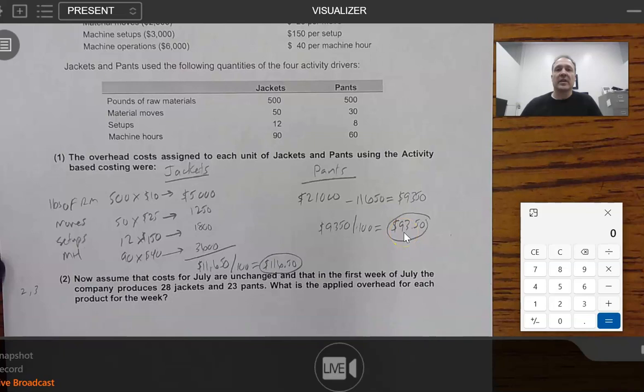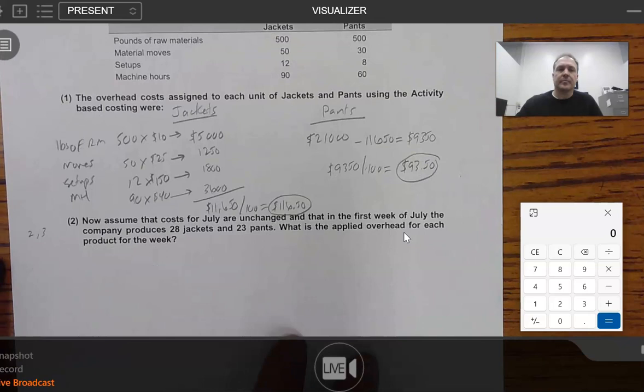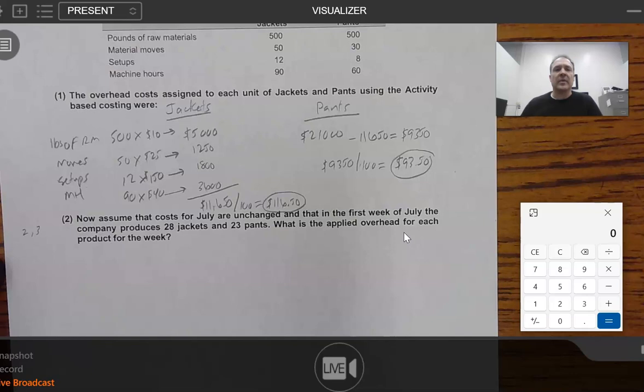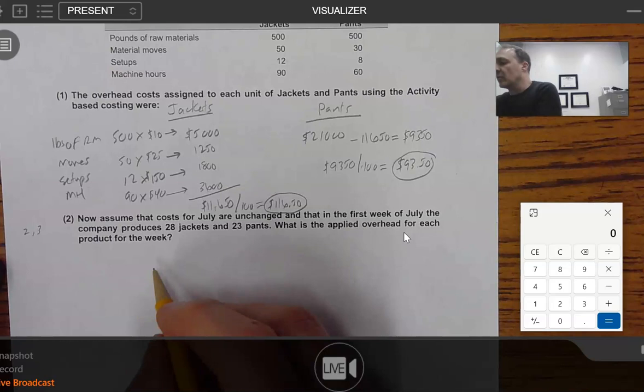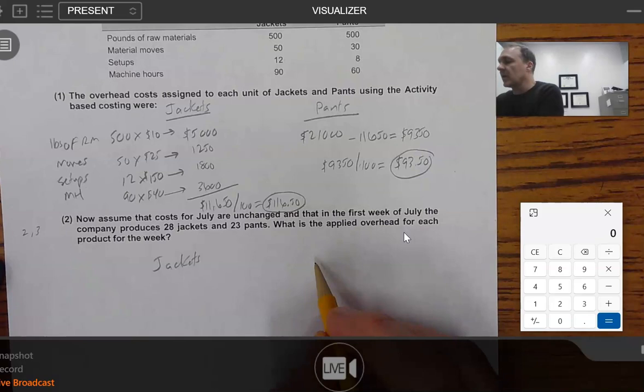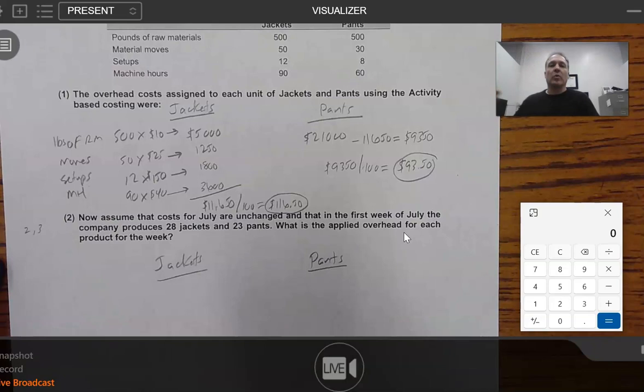So, what's the second part of this? This is learning objectives two and three combined, really. It says, now assume that costs for July are unchanged and that in the first week of July, the company produces 28 jackets and 23 pants. What is the applied overhead for each product for the week? Very simple. All we have to do, very similar to what we've already done in previous questions and not just in this chapter either. So, what we're saying here when we're saying that the costs are not expected to change, we're saying that these rates are intact.